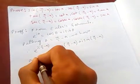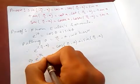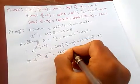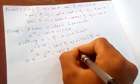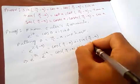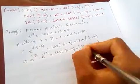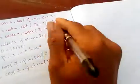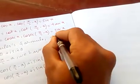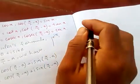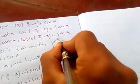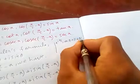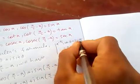We can split the left side as e^(iπ/2) times e^(-ix), which equals cos(π/2 - x) plus i sin(π/2 - x). And e^(iπ/2) is just cos(π/2) plus i sin(π/2).